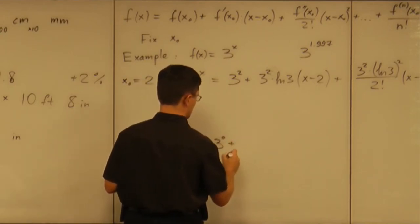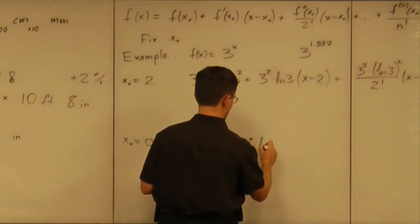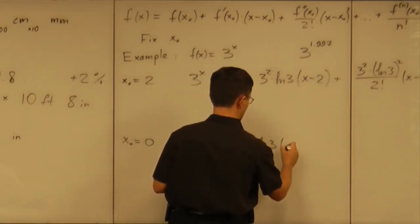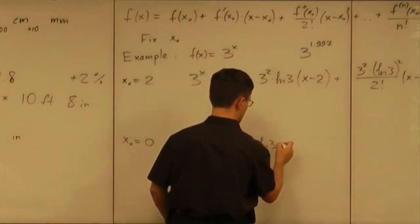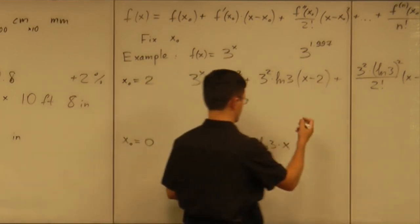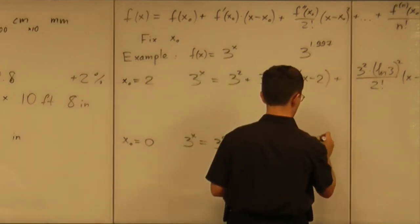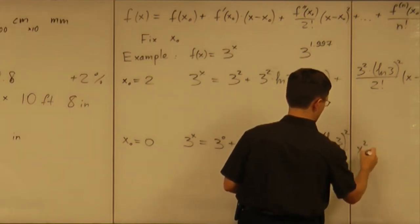3^0, plus the value of derivative at 0, which is 3^0 times natural log of 3, multiplied by x, plus the value of second derivative, which is 3^0 times (natural log of 3) squared, over 2 factorial times x squared.